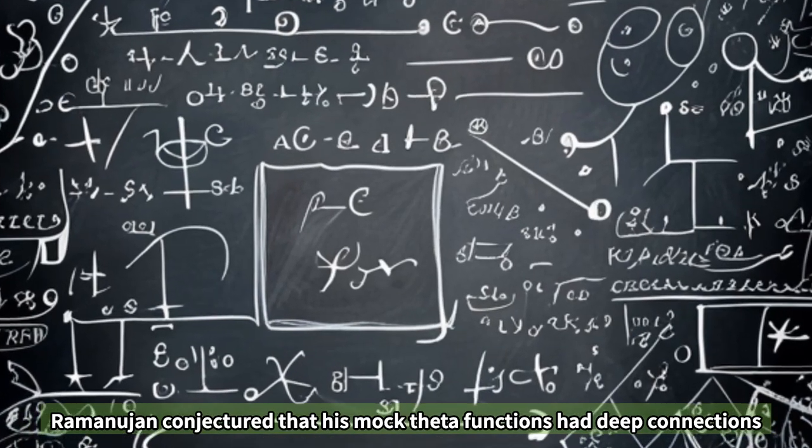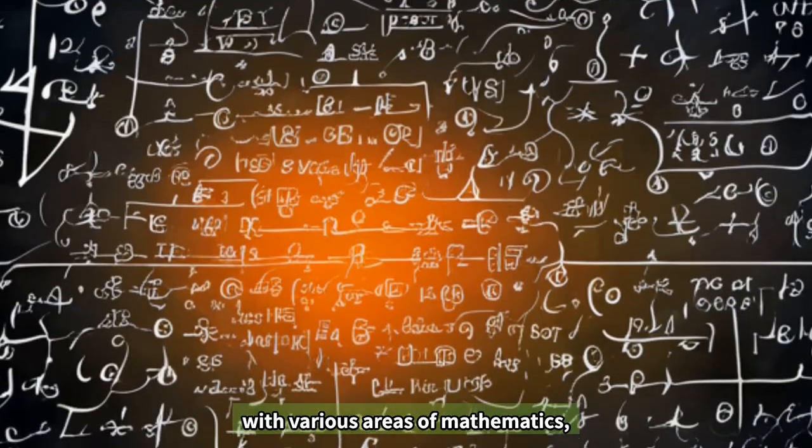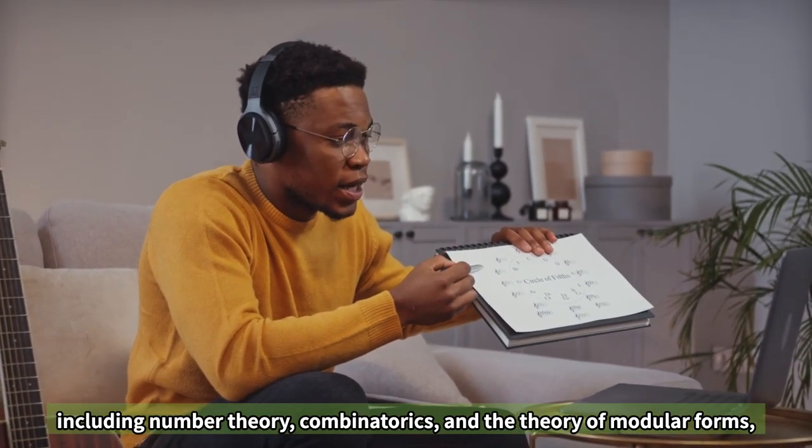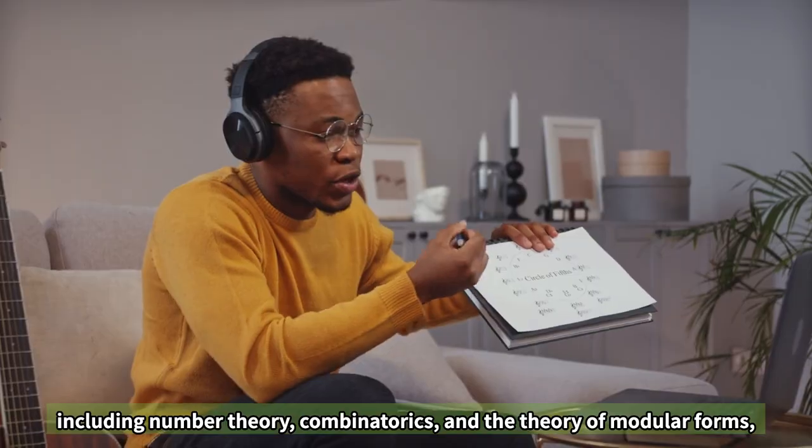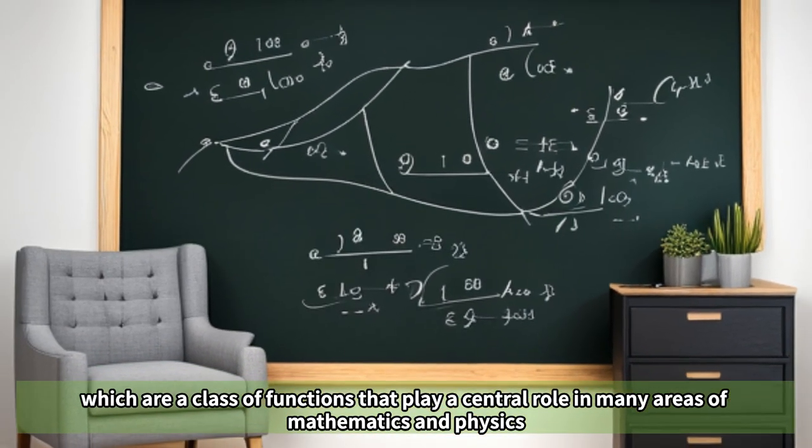Ramanujan conjectured that his Mach-theta functions had deep connections with various areas of mathematics, including number theory, combinatorics, and the theory of modular forms, which are a class of functions that play a central role in many areas of mathematics and physics.